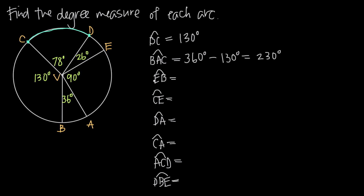What about arc EB? Because it's two letters, it's a minor arc. We start at E and come down to B. That's going to be 90 degrees plus 36 degrees, so 90 plus 36 gives us 126 degrees as the measure of arc EB.